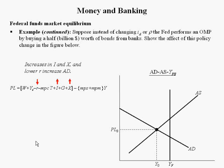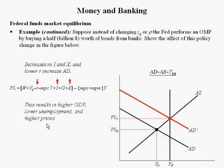These three effects shift aggregate demand out to the right until demand crosses aggregate supply at full employment output. This results in higher GDP, lower unemployment, and higher prices. It's really important that the Fed try to keep full employment output and real GDP equal.